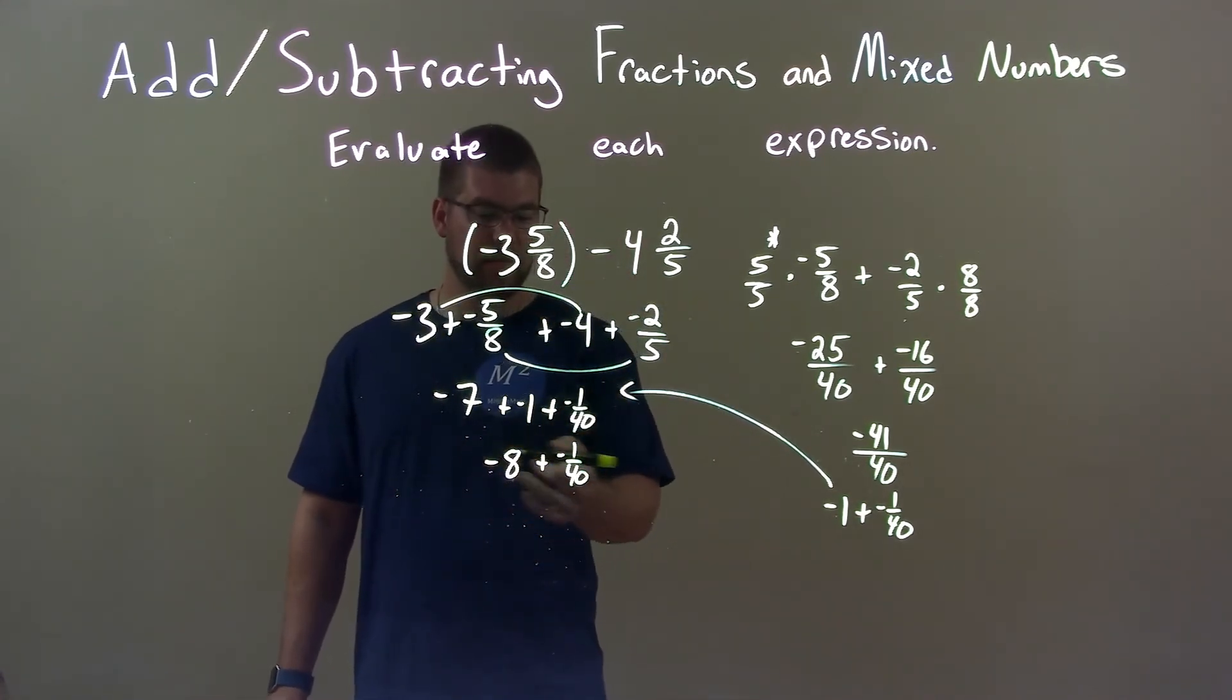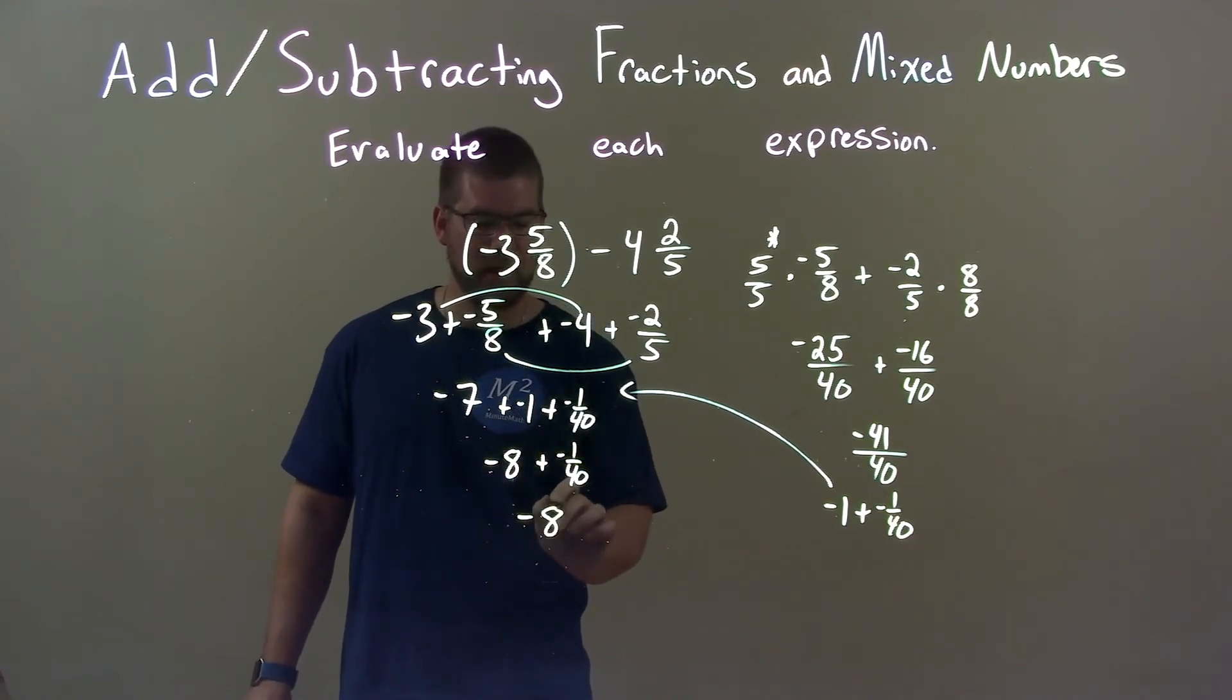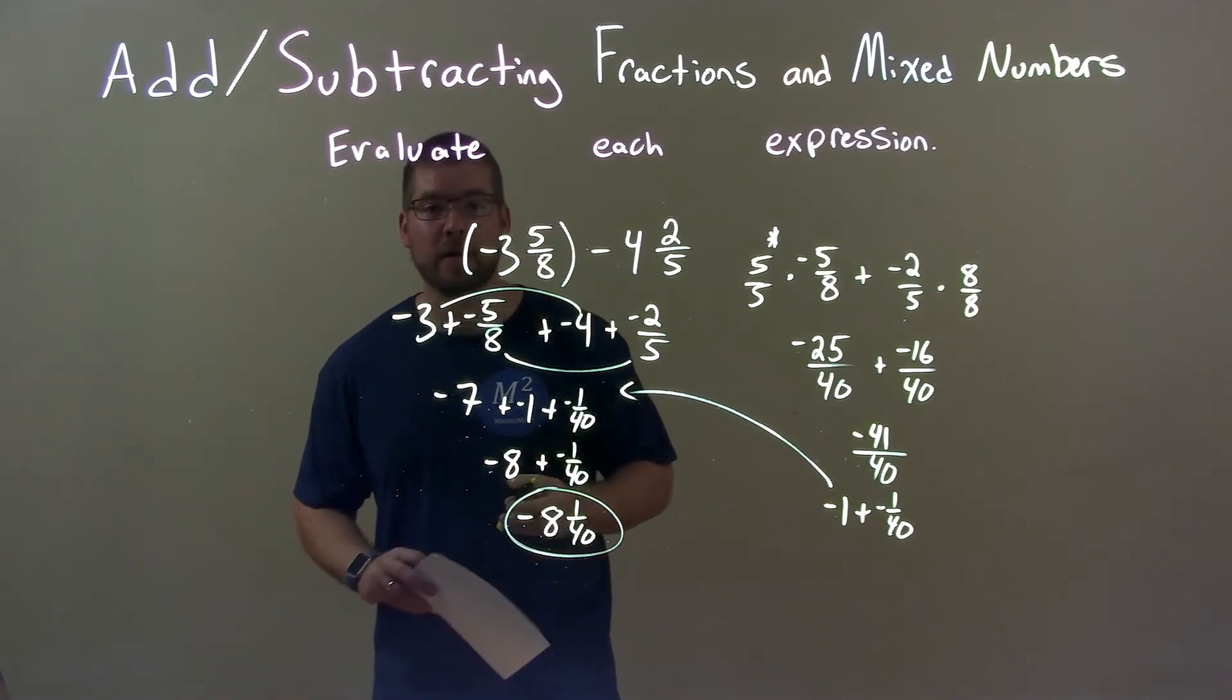And now combine these two. They're both negative, so we can write it as one number easily: negative 8 and 1 over 40. And that's our final answer.